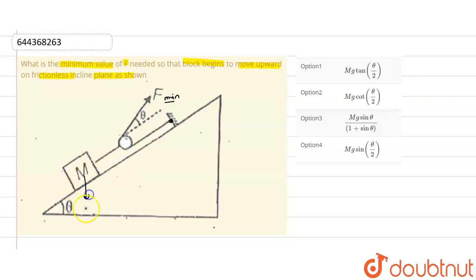this will be mg, the weight of the block. So this will be theta. This will be theta, so now this will be mg cos theta and here it will be mg sin theta.